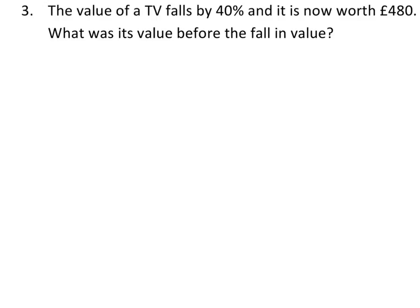Question 3 in the non-calculator is a reversing percentage change question. We're told the value of a TV falls by 40% and is now worth £480 — what was the original value? The original value would be 100%. The TV has fallen by 40%, so 100 minus 40 means our current value represents 60% of the original price. So we write down: 60% equals £480.